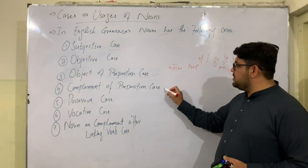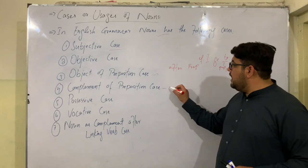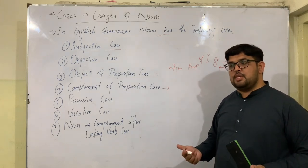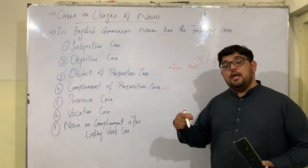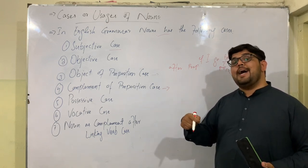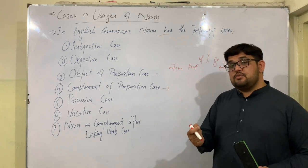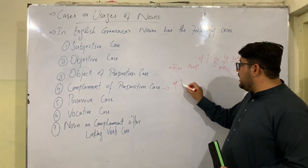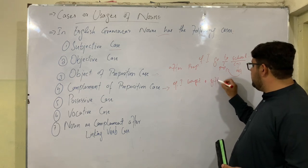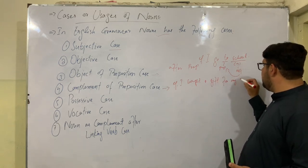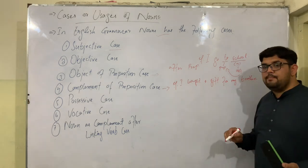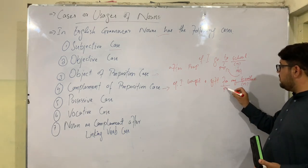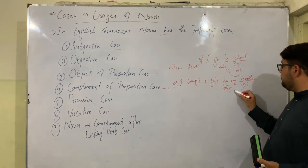The next is the complement of preposition case, also called the dative case. Here, a noun comes after an indirect object or after direct transitive verbs and a preposition to function as the complement of preposition case. For example: 'I bought a gift for my brother.' Here, 'my brother' is a noun — it comes after the preposition 'for.'